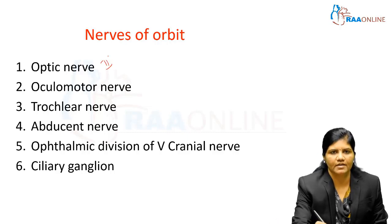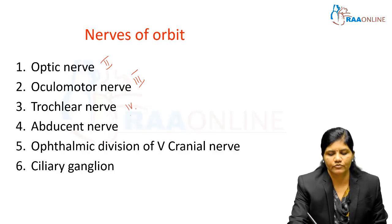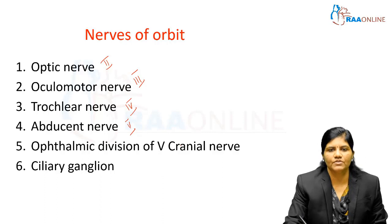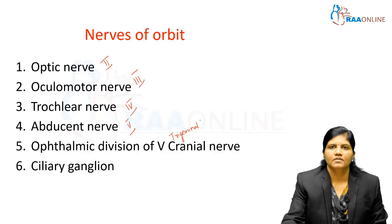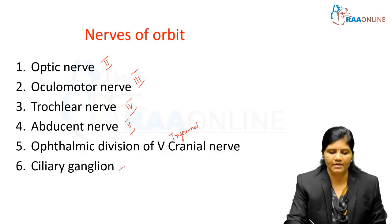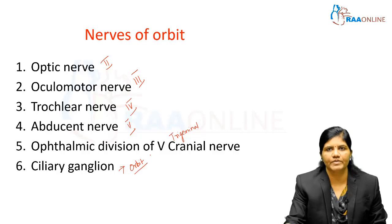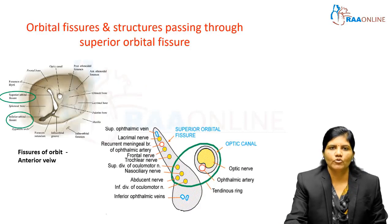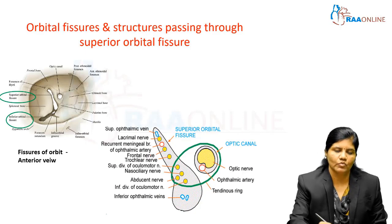The optic nerve is the second cranial nerve, oculomotor is the third, trochlear is the fourth, and abducent is the sixth cranial nerve. The ophthalmic division of the trigeminal nerve is the fifth cranial nerve. So the orbit contains the second, third, fourth, fifth, and sixth cranial nerves, as well as the ciliary ganglion, which is present within the orbit. Before moving into the topic proper, let's see the openings present in the bony orbit.